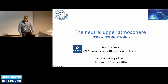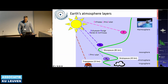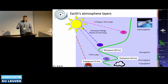Today we're going to talk about the neutral atmosphere, which is the thermosphere and the exosphere. It's about the same altitude that Luca described yesterday — from about 100 to 1000 to 1500 kilometers. It is important for two reasons: my main interest is satellite drag, so the neutral atmosphere is what causes satellite drag, which makes prediction of satellite orbits into the future a little bit complicated.